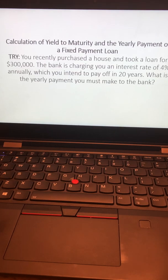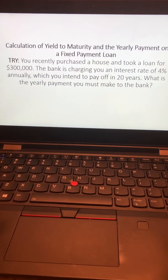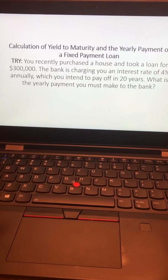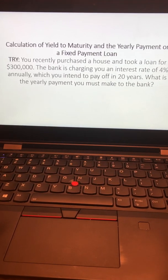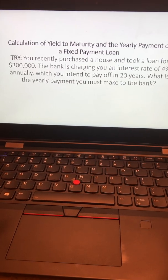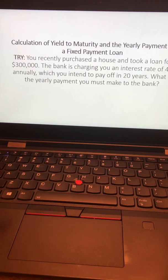And at the end of 20 years, we expect our future value to be zero because we repaid the entire loan. So we need to find out what the yearly payment must be, which we need to make to the bank, or the PMT.